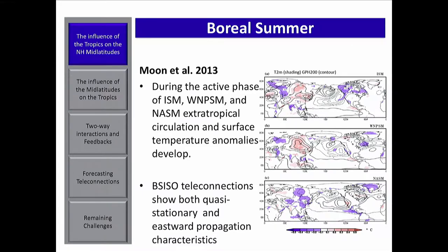So far, these results were mostly focused on boreal winter, but there are a very small number of studies looking at the influence of boreal summer convective activity on mid-latitude teleconnections. Moon et al. looked at the influence of the active phase of the South Asian monsoon and North American summer monsoon on extratropical circulation, in particular surface temperature anomalies. They did find significant teleconnections showing both quasi-stationary and eastward propagating characteristics.